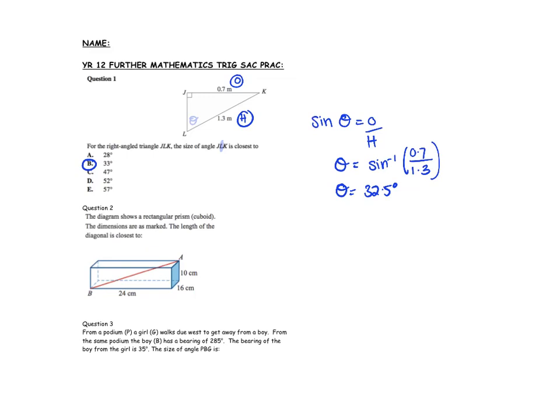The next question: the diagram shows a rectangular prism or cuboid. The dimensions are marked and we need the length of the diagonal. What you need to be careful with here is which triangle you're going to use — you need to go across the ground and then use the side height as well.